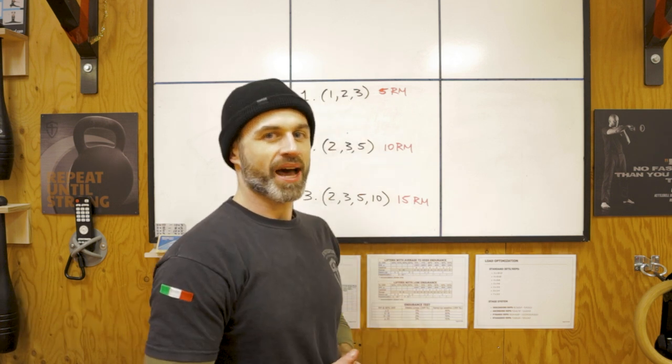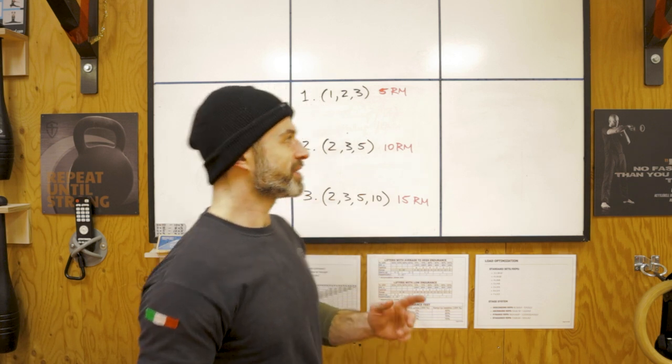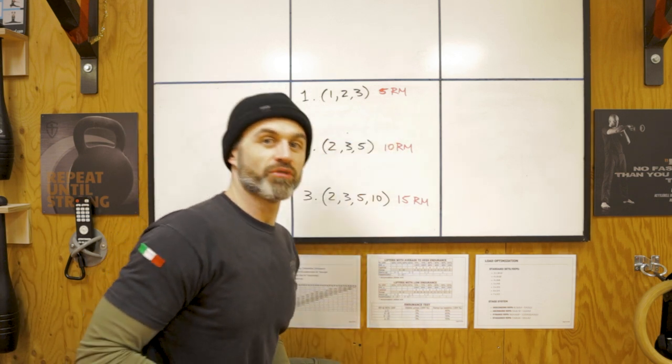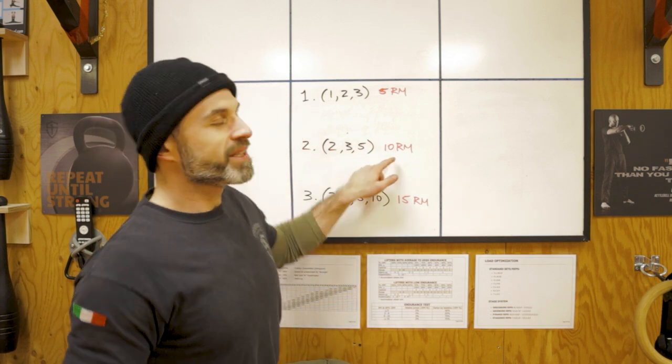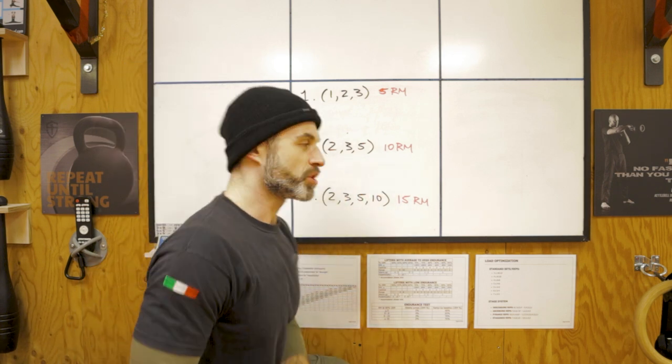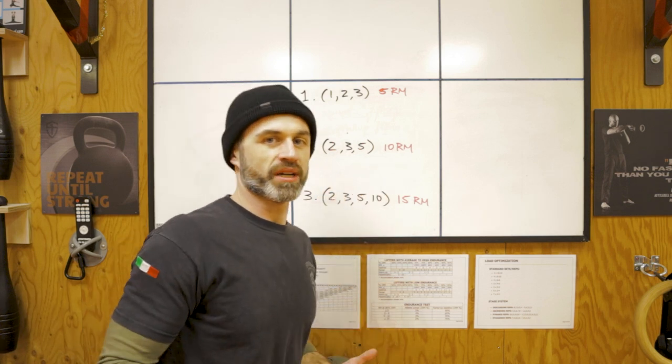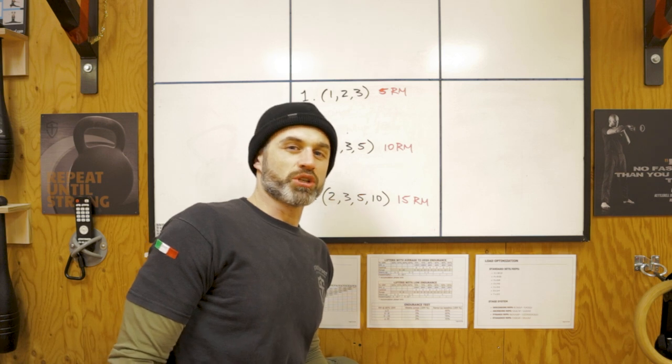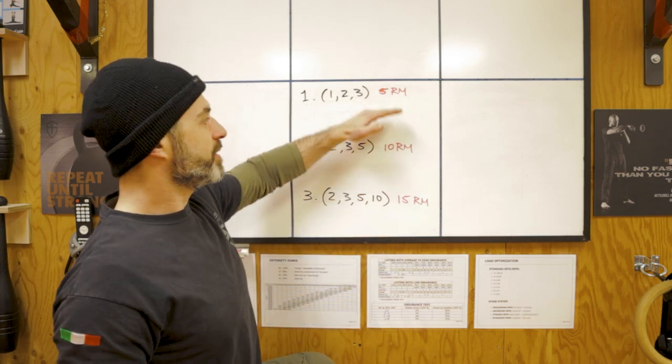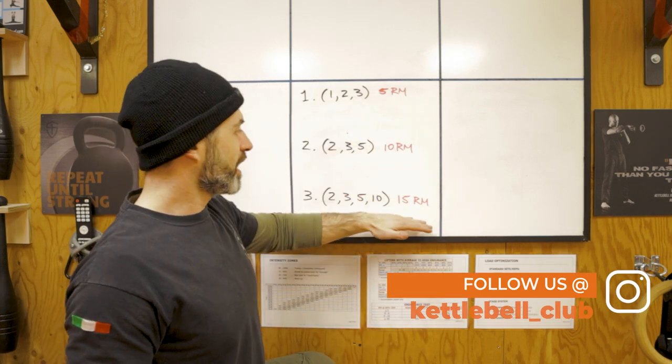A weight that for a given exercise you can do approximately five repetitions, plus or minus one doesn't matter. A weight that you can do ten repetitions, again plus or minus one is fine, and another one that you could do fifteen repetitions. So you have your heavy, your medium weight, and your lightweight.